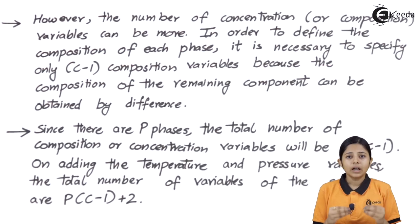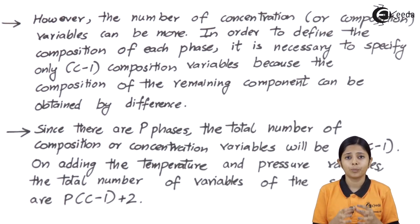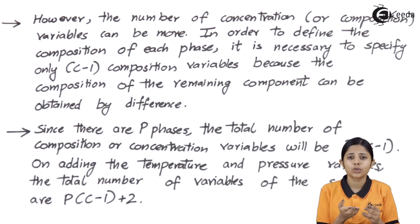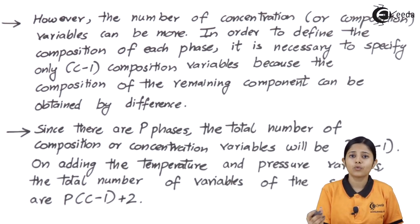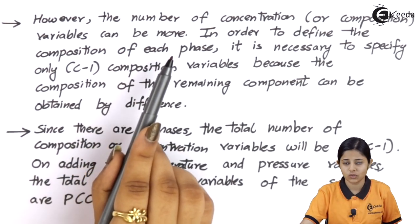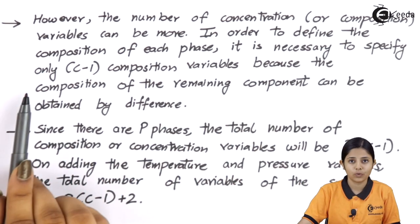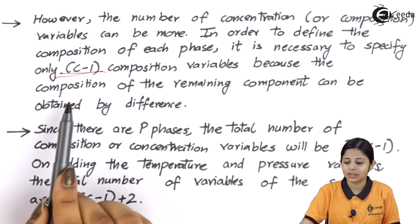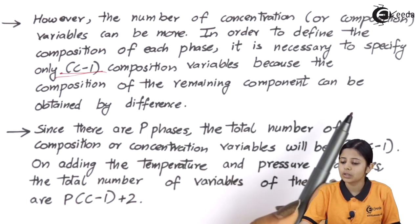Concentration can also be called composition. Temperature can either increase or decrease — that is just one variable. Pressure can also either increase or decrease. But what about composition? The concentration can increase and decrease depending upon the number of substances present. For example, if I have water plus salt plus sugar, there are two solutes to one solvent, and I can increase or decrease the composition of either solute. That's why for any solution or system, the number of concentration or composition variables can be more than one. To define the composition of each phase, it is necessary to specify C minus 1 composition variables.